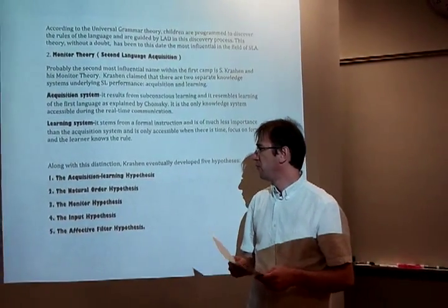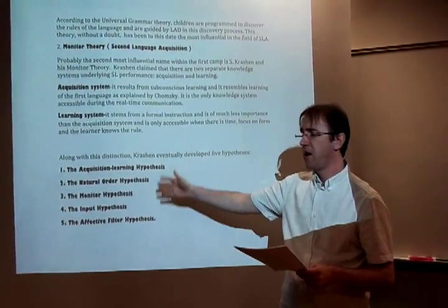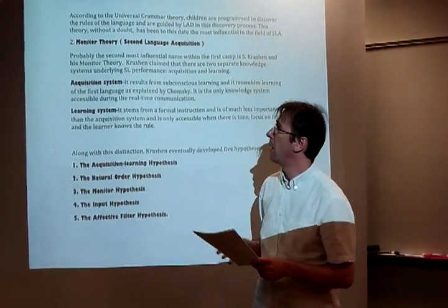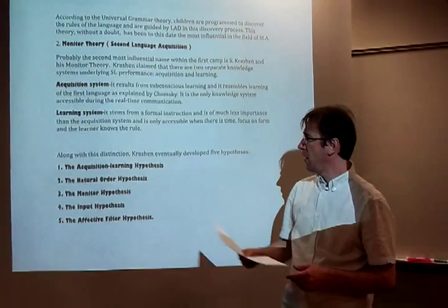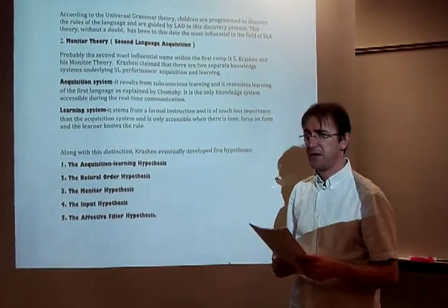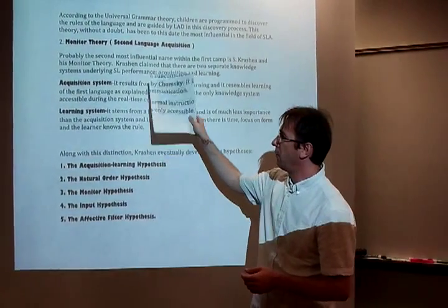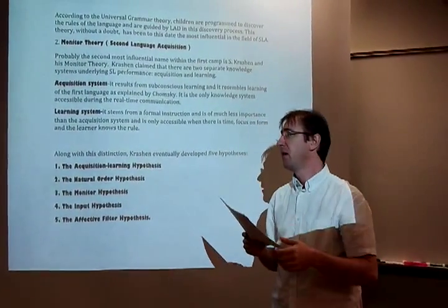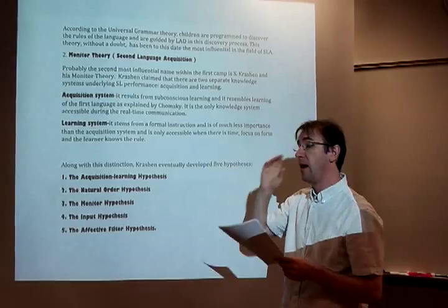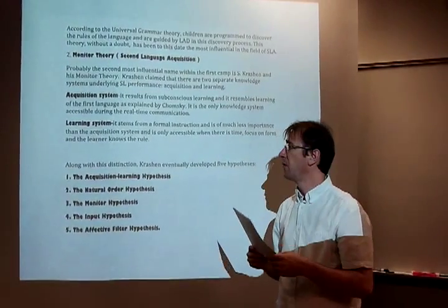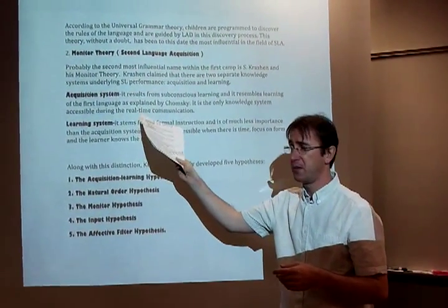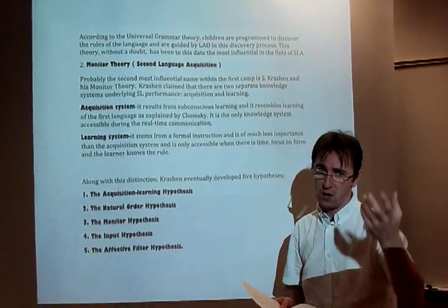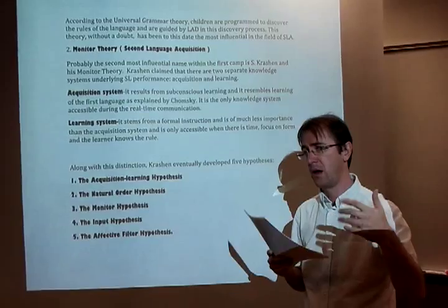Krashen went on to develop five different hypotheses based on his original monitor theory. The first, the acquisition-learning hypothesis, is essentially a restatement of this: there are two separate systems that allow us to learn language — the acquired system, which is subconscious, and the learned system, which we consciously apply and use.